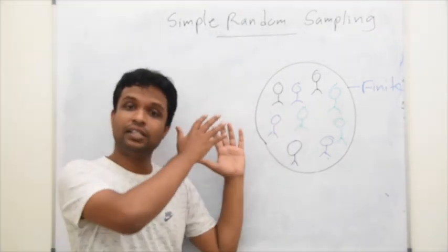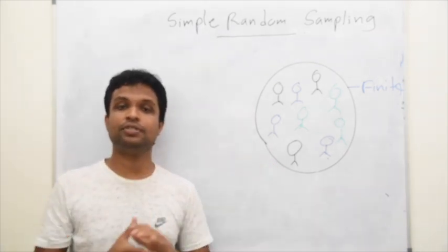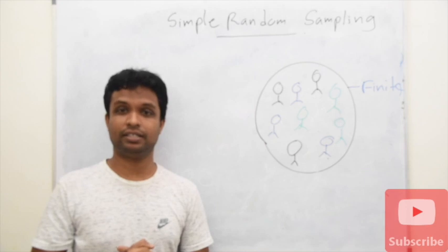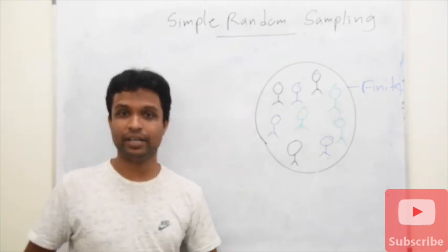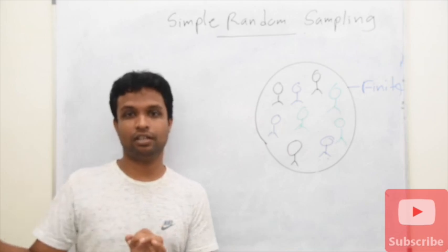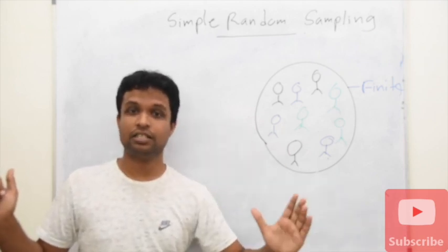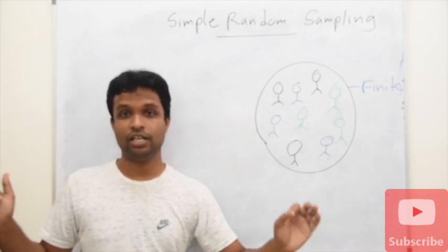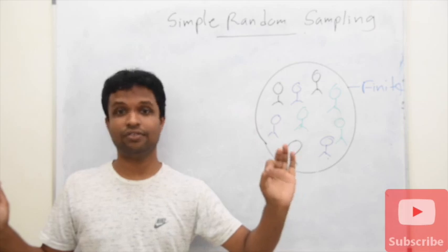For such situation, even though simple random sampling is the most unbiased technique, we have to sacrifice this unbiasedness up to some extent. We have to go for the next sampling technique, that is stratified random sampling. In the next lecture, we will consider what is stratified random sampling. Thank you very much.